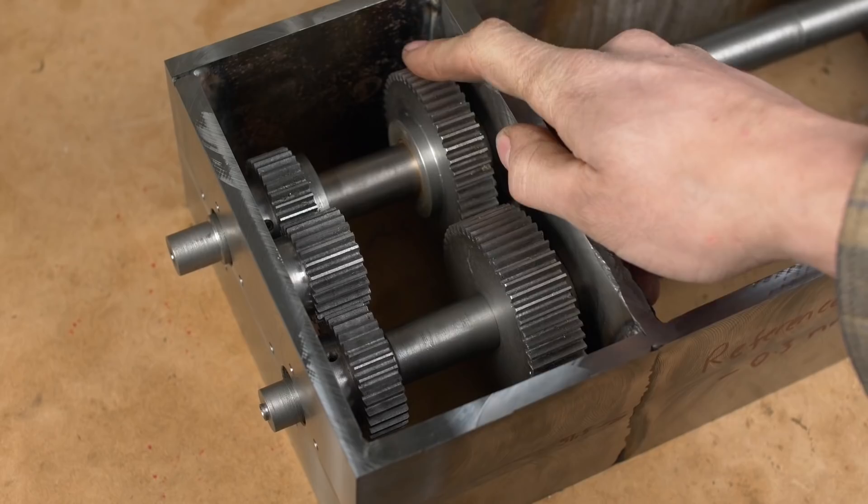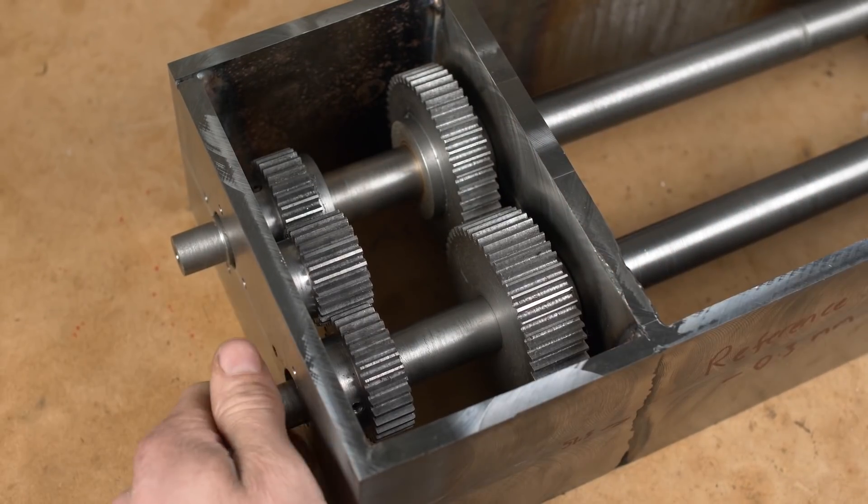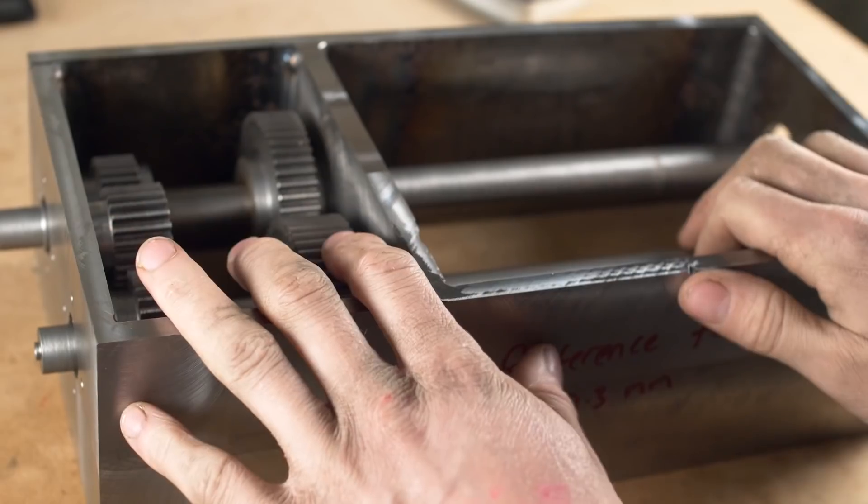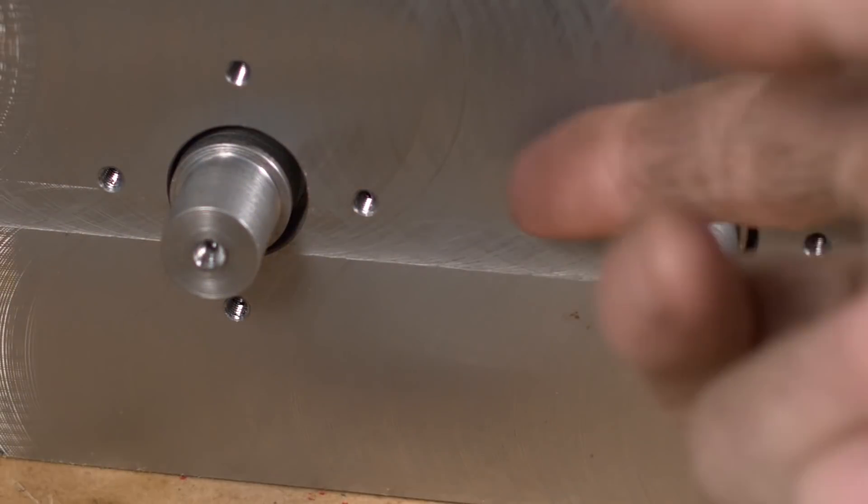Picking up from where I left off, we've got a housing, shafts, and gears. We need a way of restraining these shafts, at the moment they're just sitting loose in here. So these bearings fit here, let's make these bearing housings.